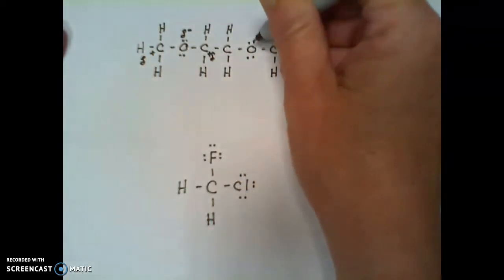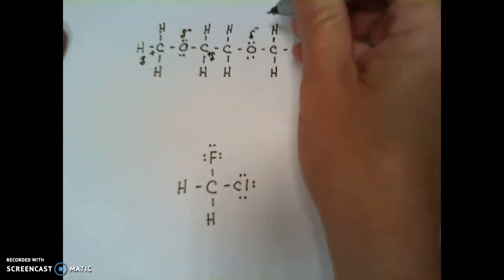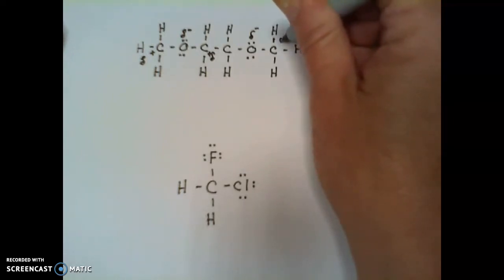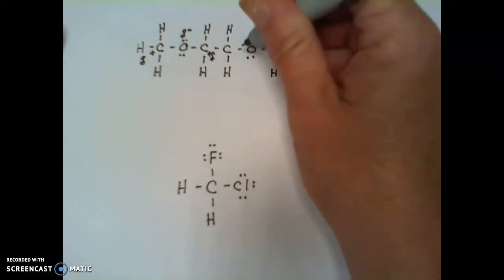And the same thing here. This oxygen will have a partial negative charge because it has a greater electronegativity, it has a greater attraction for the electron, and these carbons will be partially positive.